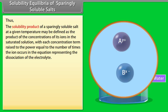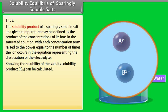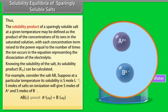The solubility product of a sparingly soluble salt at a given temperature may be defined as the product of the concentrations of its ions in the saturated solution, with each concentration term raised to the power equal to the number of times the ion occurs in the dissociation equation. For example, for salt AB with solubility S mol L⁻¹, Ksp = [A⁺][B⁻] = S × S = S².